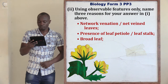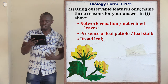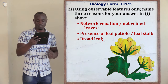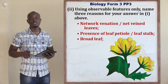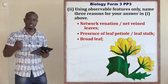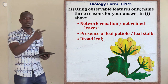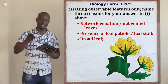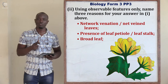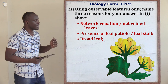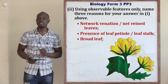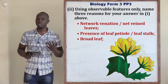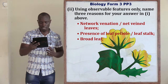Using observable features, three reasons for it being Dicotyledonae are: first, it has network venation; second, it has a petiole or leaf stalk — only Dicotyledonous plants have a leaf stalk, while Monocotyledonous plants have a sheath attached to the stem; and third, the leaf is very broad, as most Monocotyledonous plants have very thin, narrow leaves.